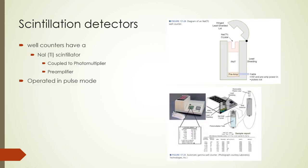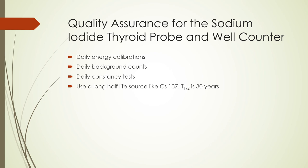The next instrument using a scintillator is the well counter. A well counter is commonly used to assay wipe test samples to detect radioactive contamination. It can also be used for clinical tests and radio-immunoassays. Well counters consist of a cylindrical sodium iodide crystal with a hole in the crystal for insertion of a sample. This configuration is geometrically efficient and allows the assay of samples as small as one nanocurie. The crystal is coupled to a photomultiplier tube and a pre-amplifier. The entire setup is placed in a thick lead shield. Both thyroid probes and well counters should have daily energy calibrations performed, along with daily background counts and daily constancy tests using a long half-life source like cesium-137.